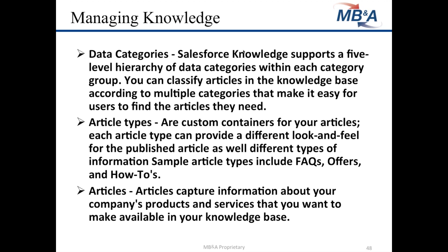Article types give you a way to change the visibility and the look and feel of the different items you're collecting information in. You may have an FAQ article type that's publicly available with different sections than a how-to article, which might be more process-focused. Or standard language articles that internal users are using just to have background information about particular problem areas. And then, of course, you've got your specific articles, which are the repository for the actual information you're trying to get in front of the customer to solve their problem.